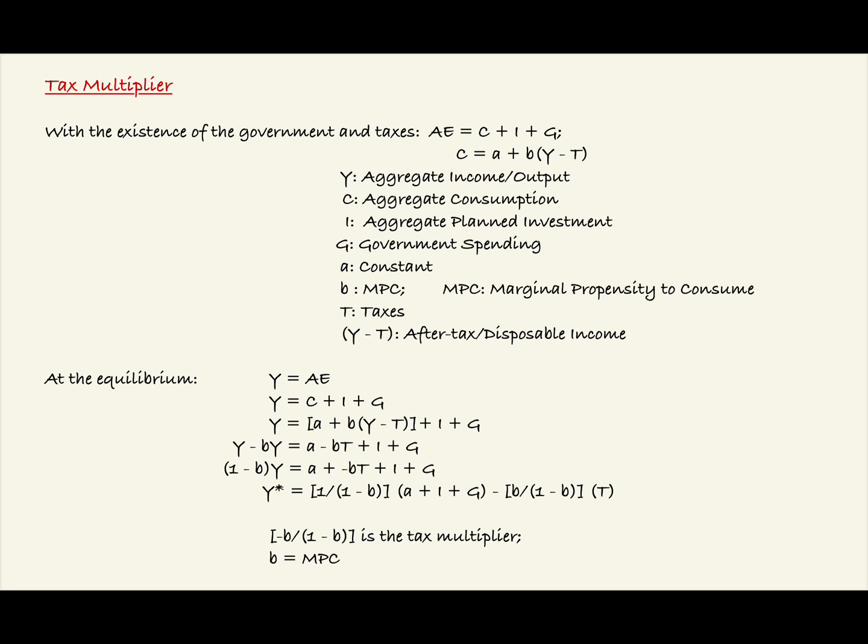After distributing the B or MPC to the quantity of Y minus T and subtracting the term BY from the right side and the left side, we find that Y minus BY equals A minus BT plus I plus G.